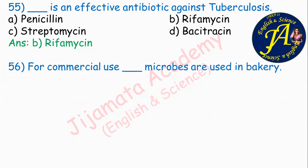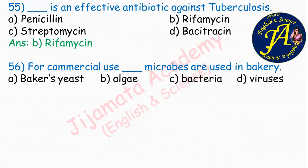For commercial use, dash microbes are used in bakery. Options are baker's yeast, algae, bacteria, viruses. Option A: baker's yeast is the correct answer. Baker's yeast, Saccharomyces cerevisiae, is used in bakery. These microbes are used in bakery.